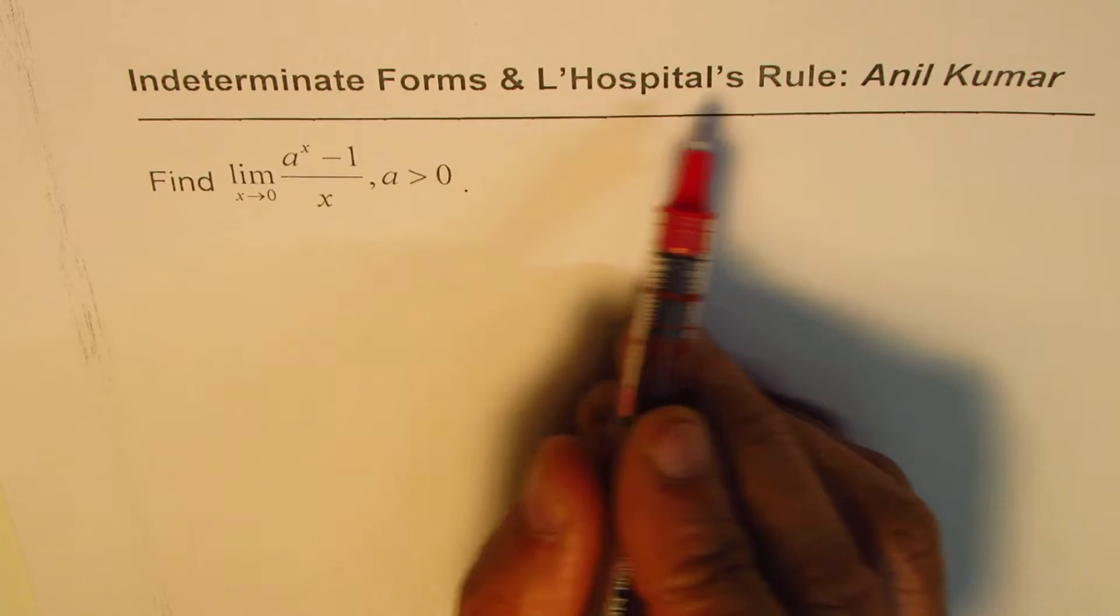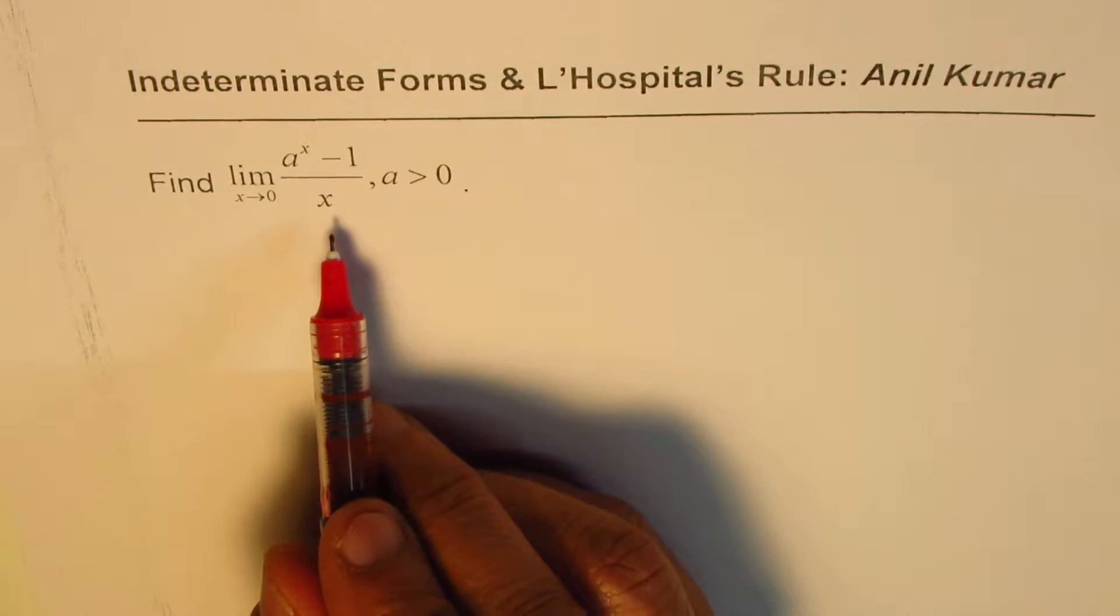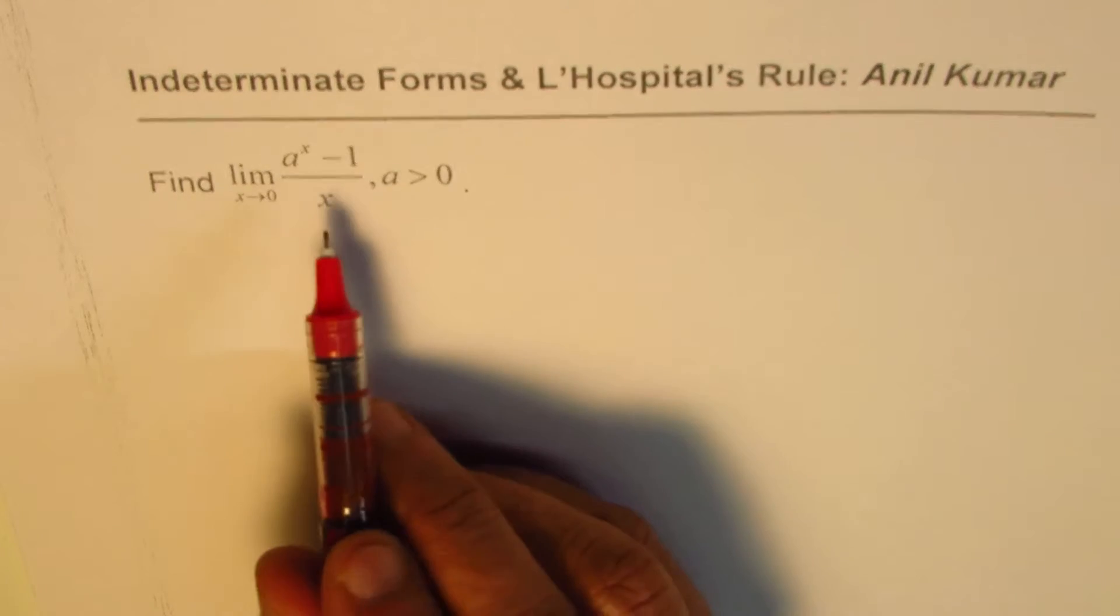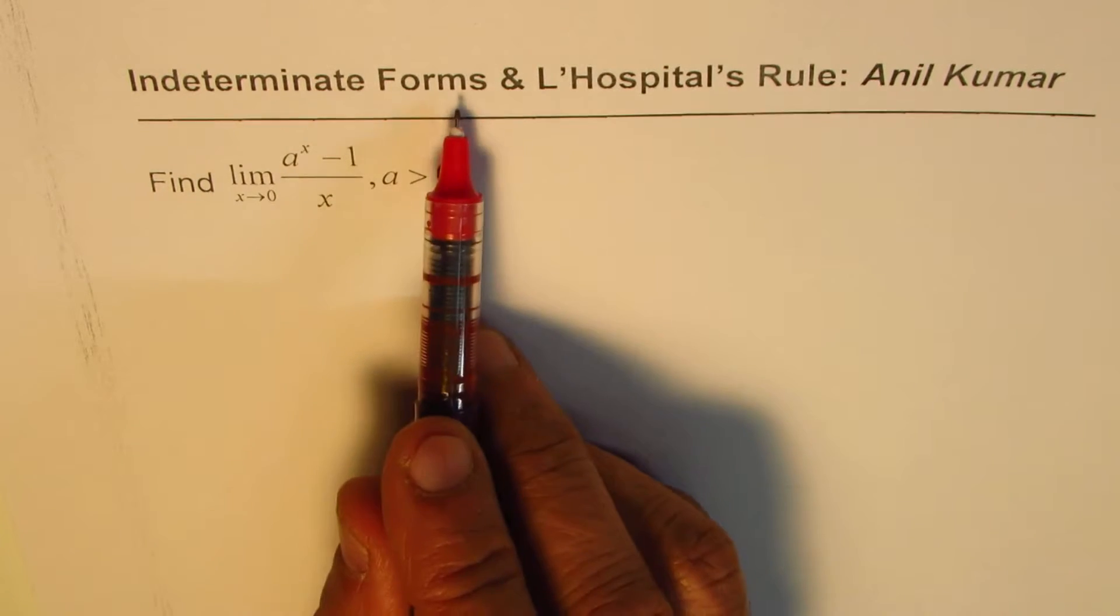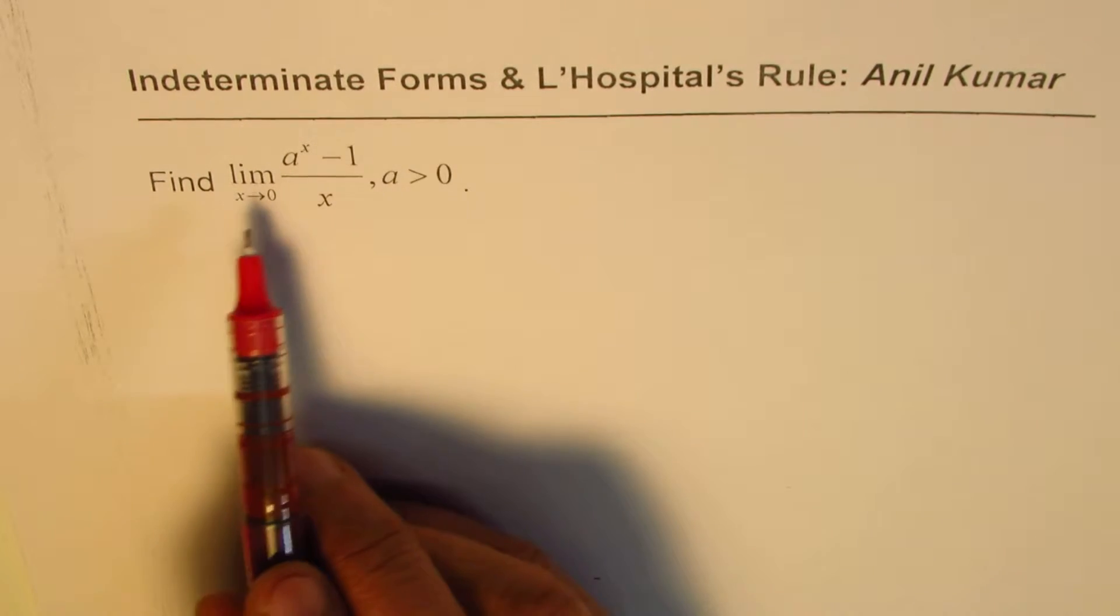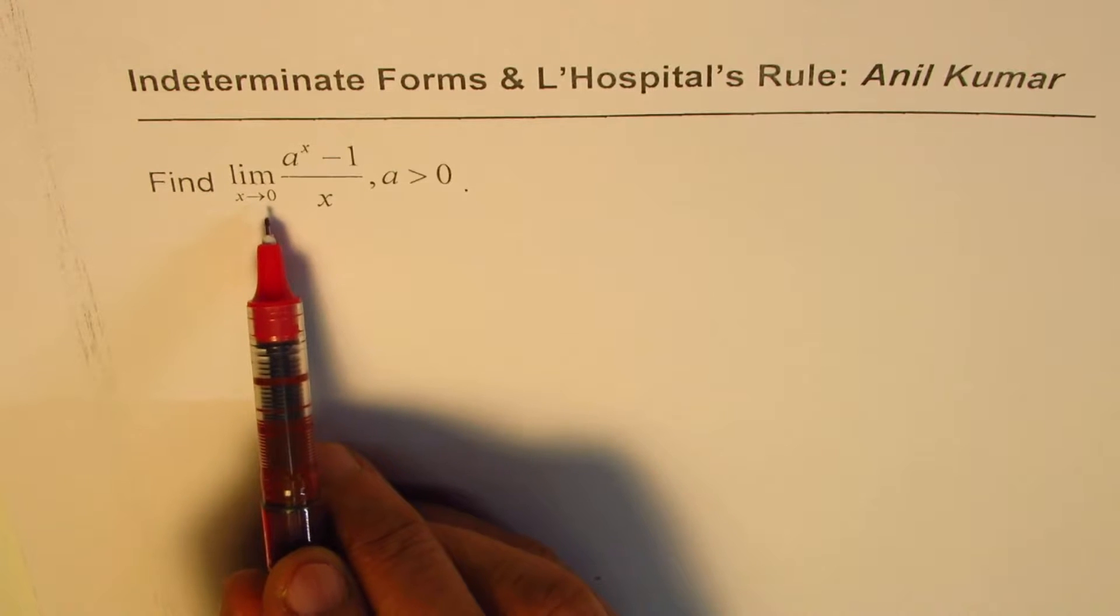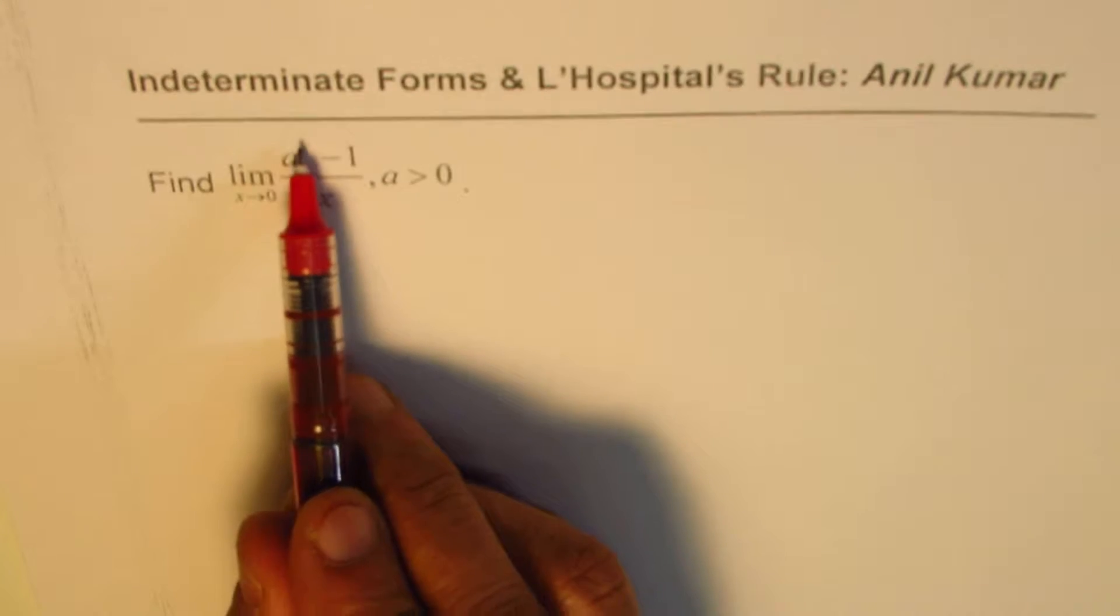When you want to apply L'Hospital's rule, it is important to check whether it is the right kind of indeterminate form or not. The question here is find limit when x approaches 0 for a to the power of x minus 1 divided by x, where a is greater than 0.